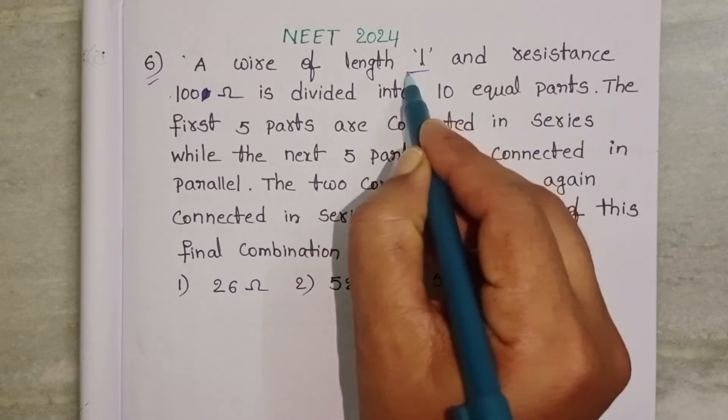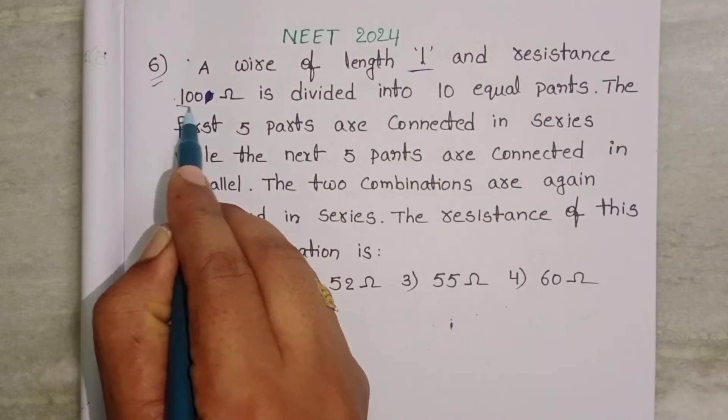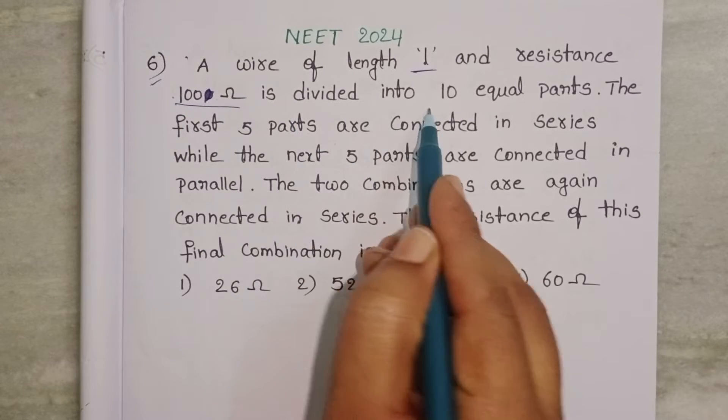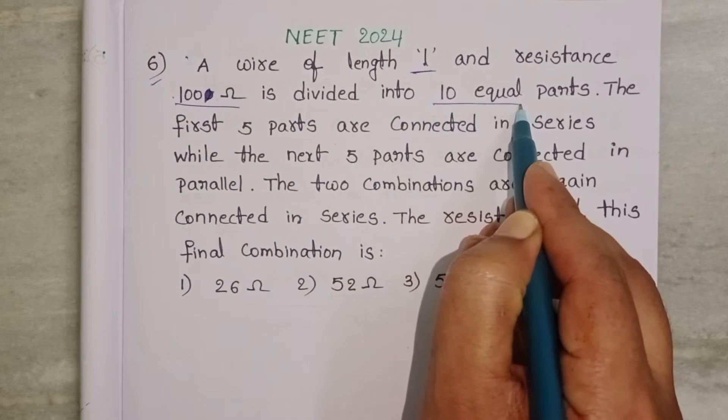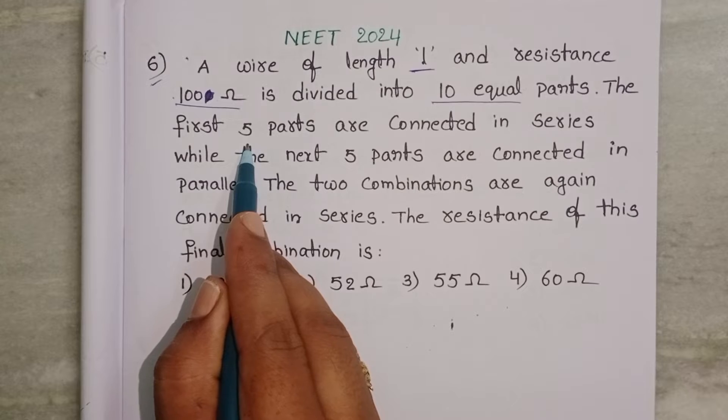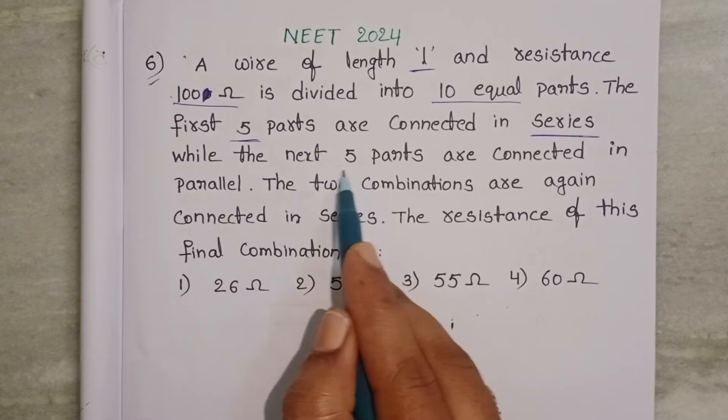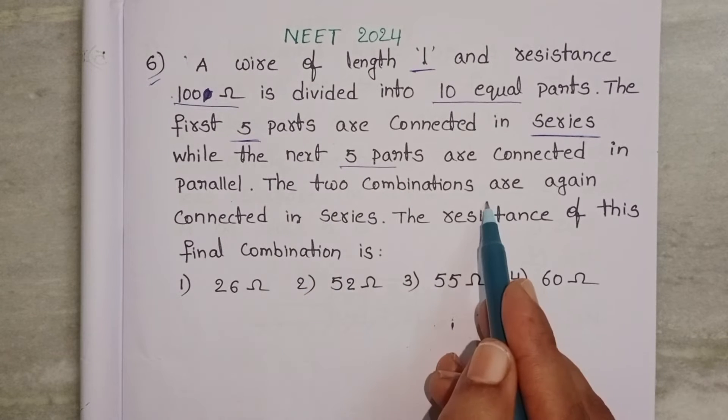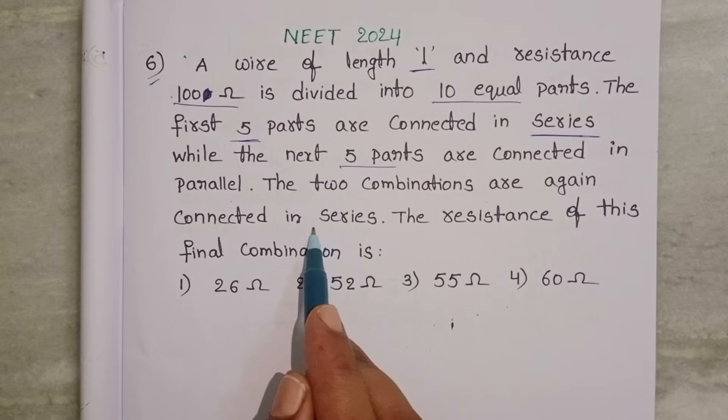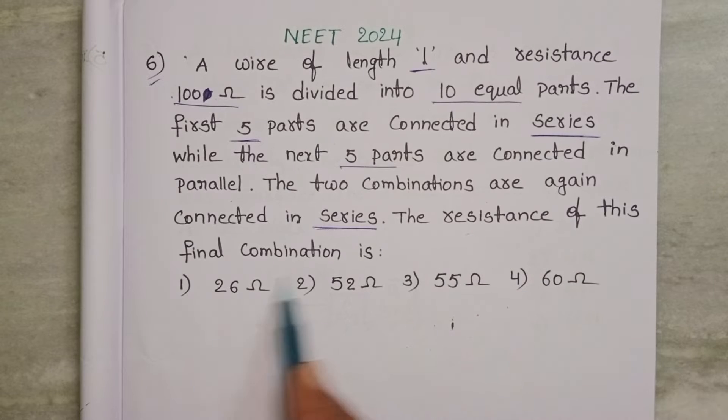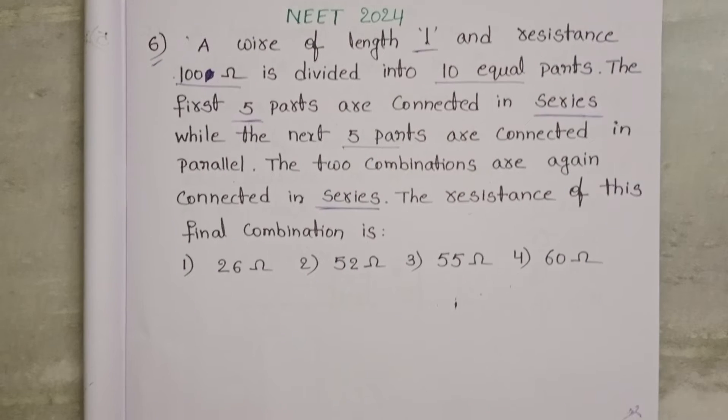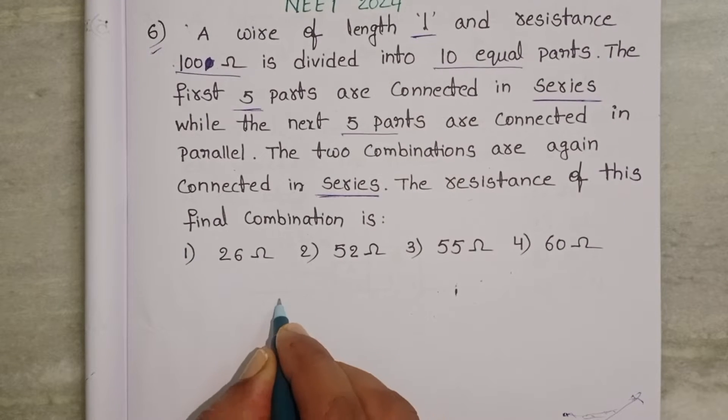A wire of length L and resistance 100 ohm is divided into 10 equal parts. The first 5 parts are connected in series while the next 5 parts are connected in parallel. The two combinations are again connected in series. The resistance of this final combination is: